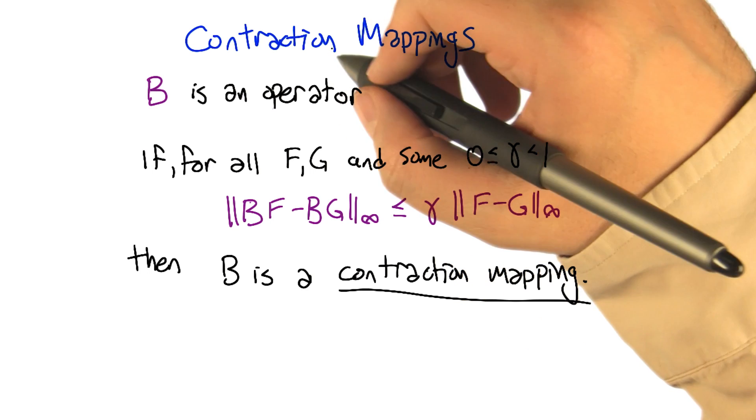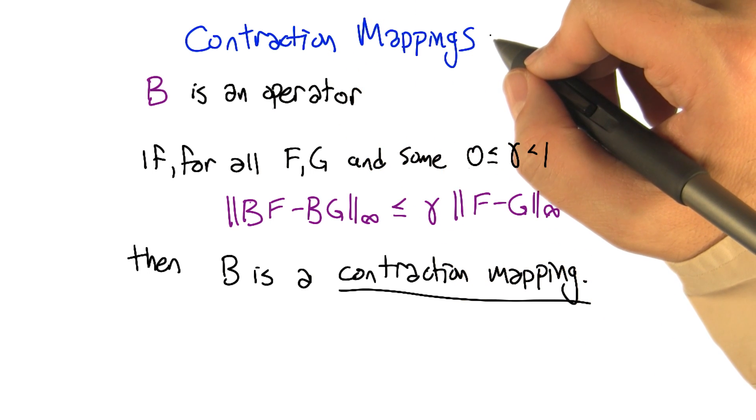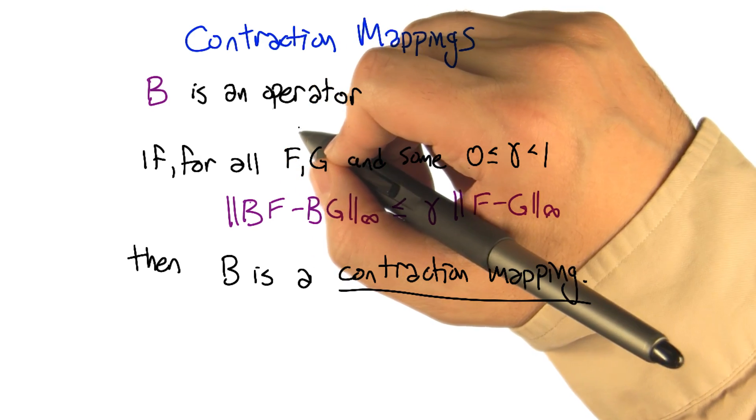So we're going to define a special kind of operator called a contraction mapping. And we're going to say an operator is a contraction mapping if it has this property.